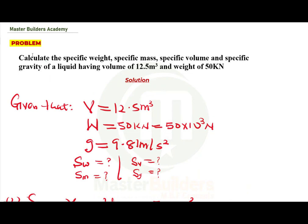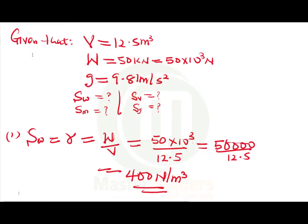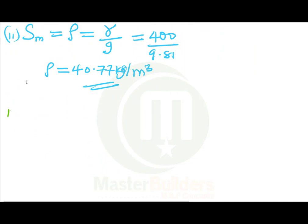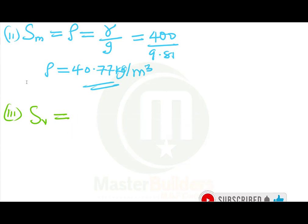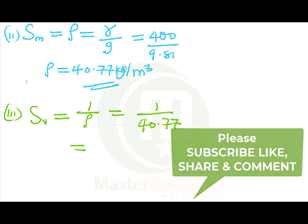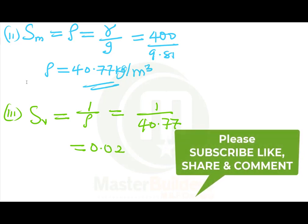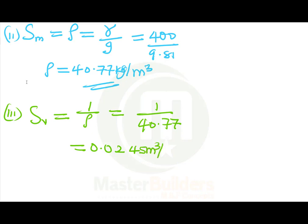Number three: specific volume. Specific volume is the reciprocal of specific mass — that is, one over density. So specific volume = 1 / 40.77. The final answer for specific volume is 0.0245 meter cube per kilogram.